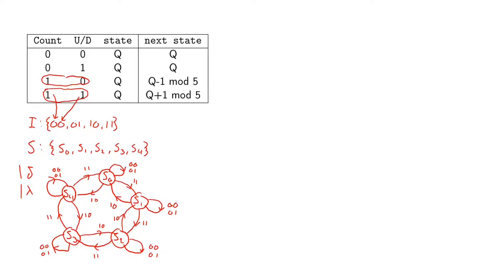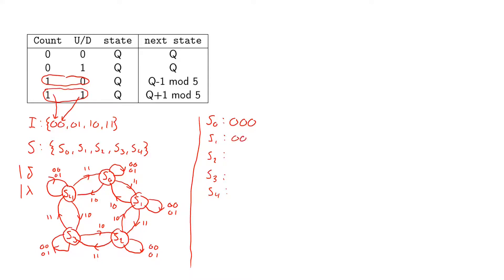Now let us go one step further towards realizing this as a digital circuit. The first thing we want to do is a state assignment — we need to represent each state as a binary value. Previously we could use 0 and 1, but with five different states we cannot even use two bits, so we need three bits in total. We assign s0 as 000, s1 as 001, s2 as 010, s3 as 011, and s4 as 100.